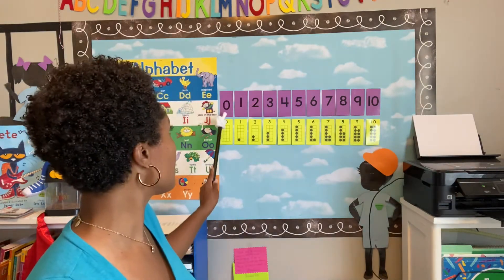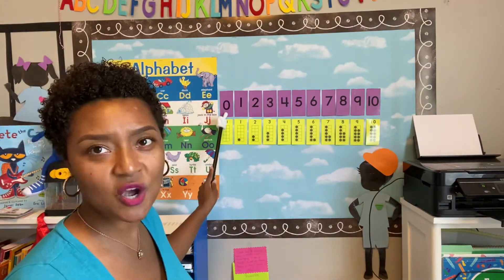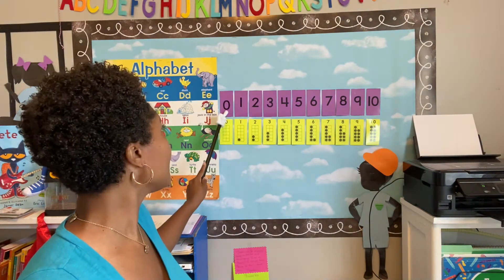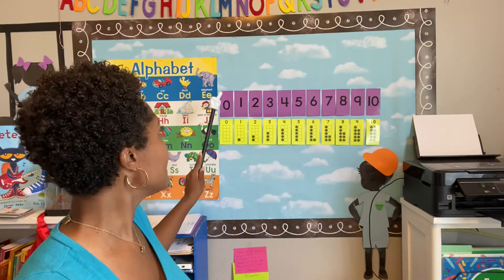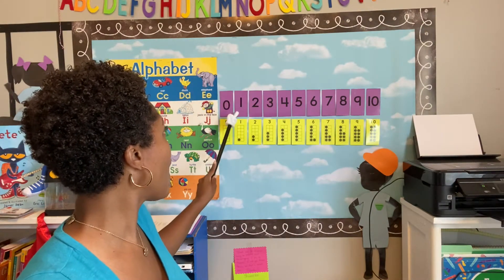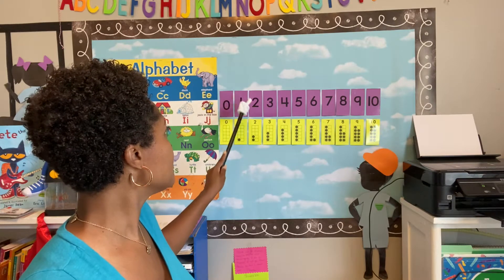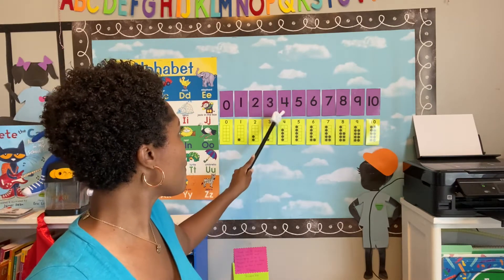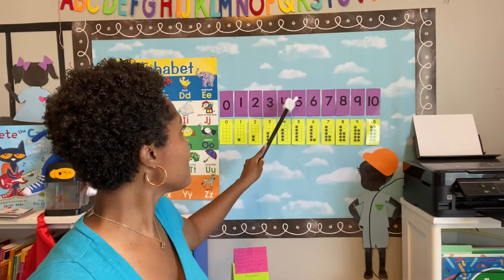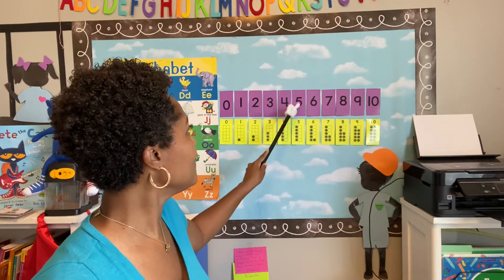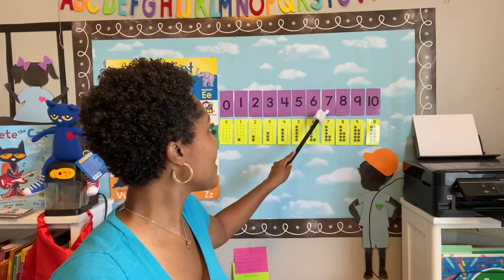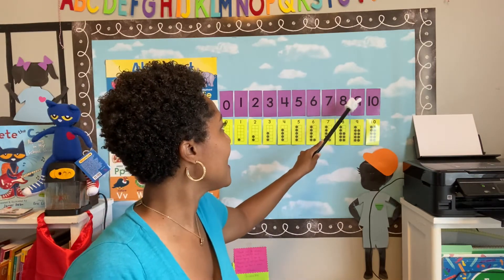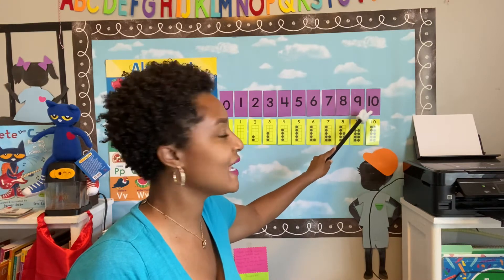Let's start at zero. We always start at zero when we count our numbers. Zero, one, two, three, four, five, six, seven, eight, nine, ten.